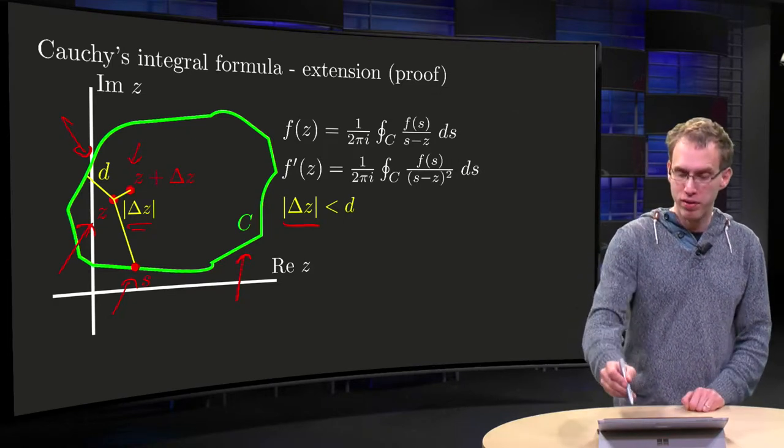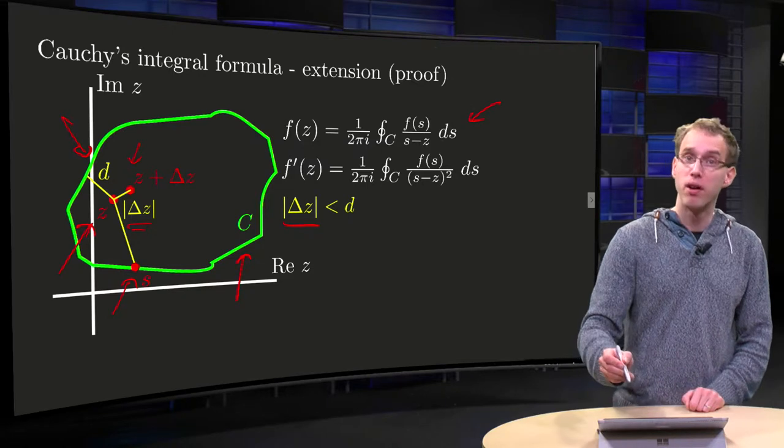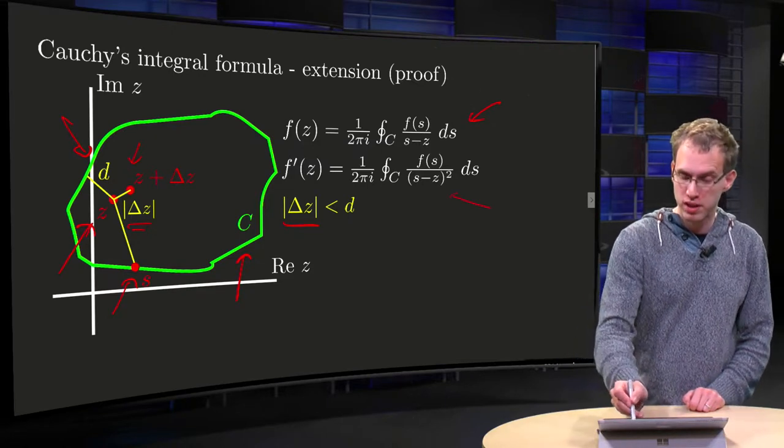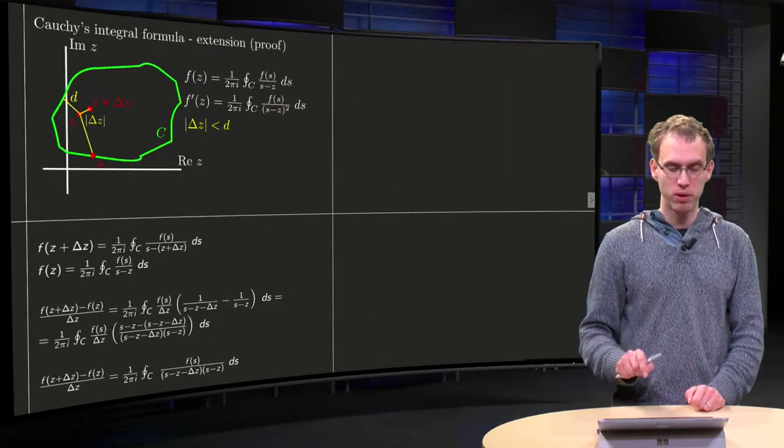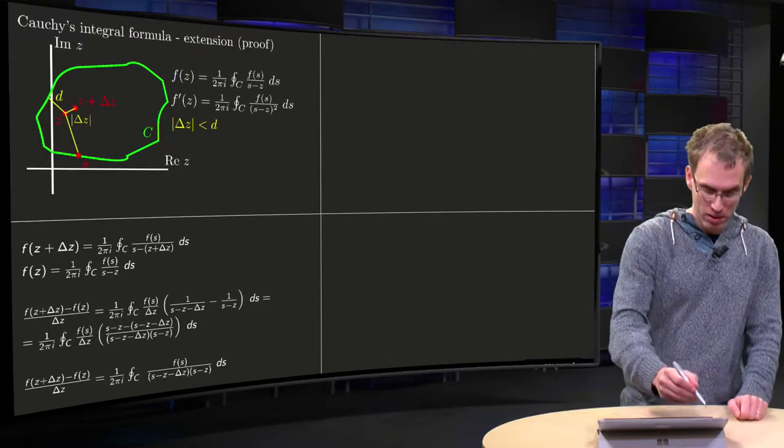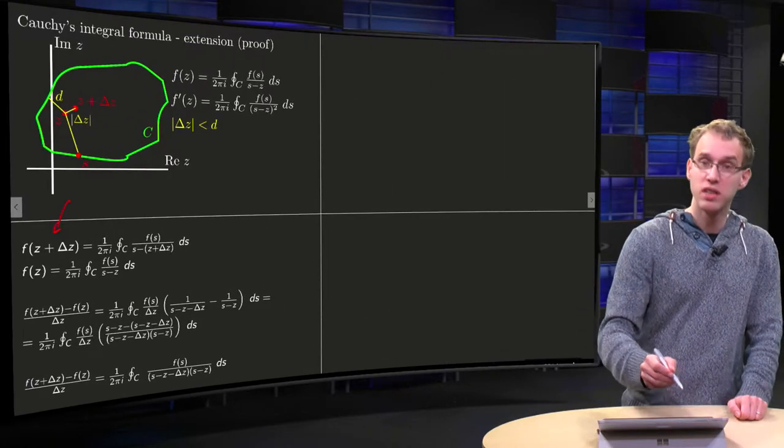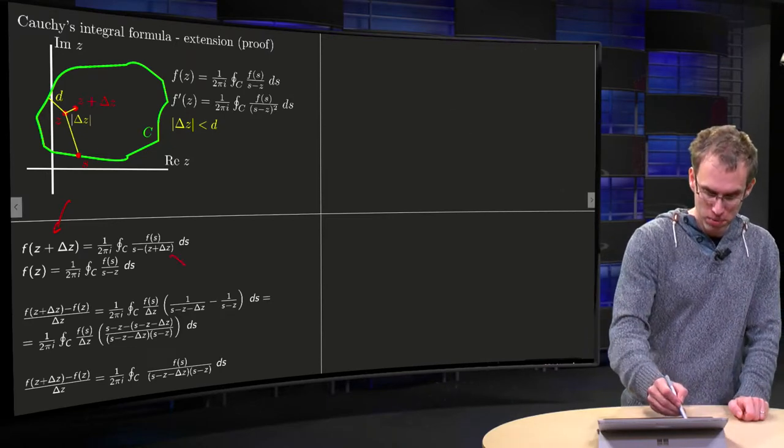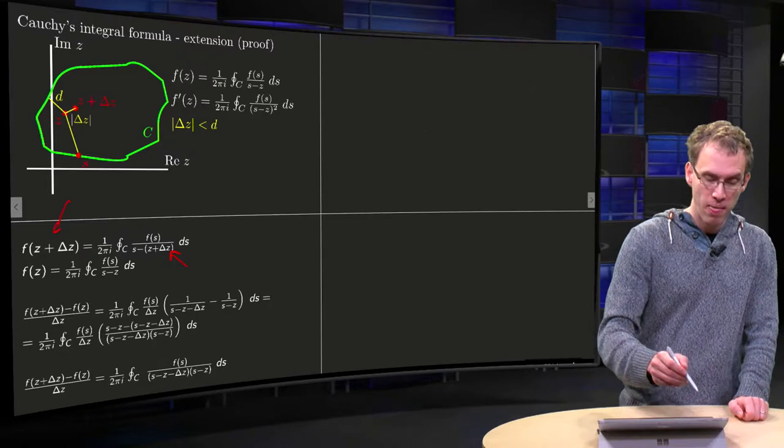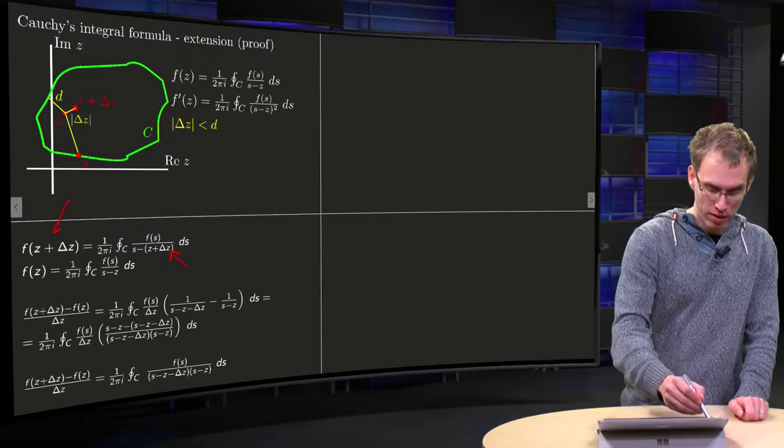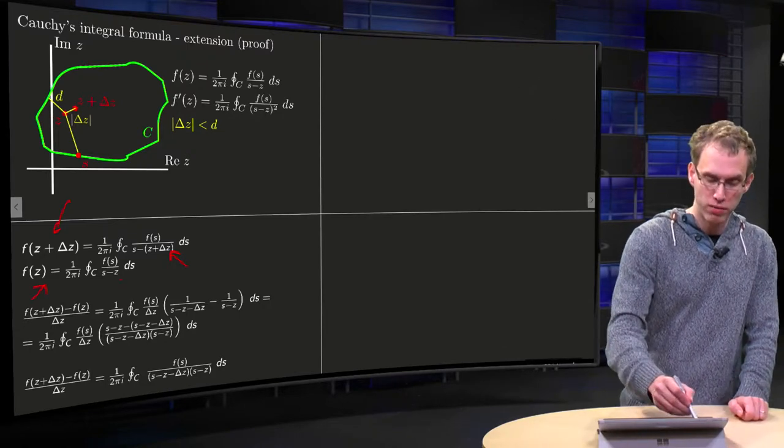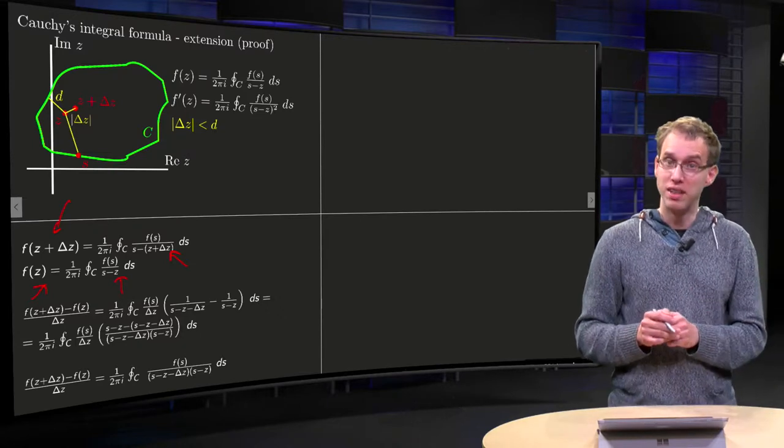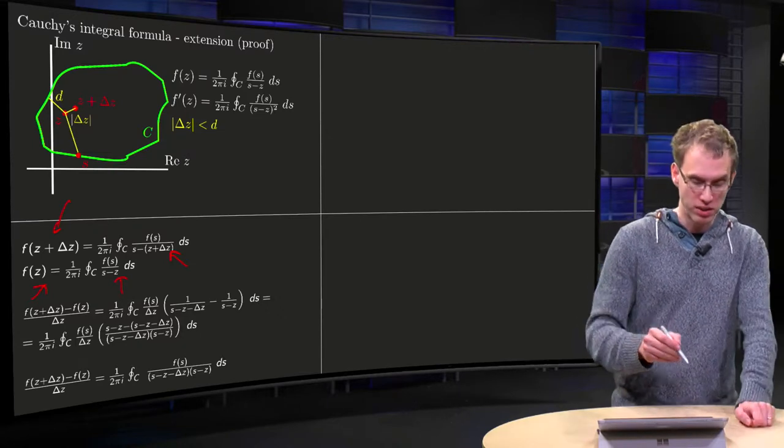Now what do we want to prove? We have Cauchy's integral formula over there, and we want to prove the first extension over here. So, how does that work? Well, first we write down f at z plus delta z. We can use Cauchy's integral formula for that, just plug in z plus delta z on the spot of z. And we have f of z, just the standard form.